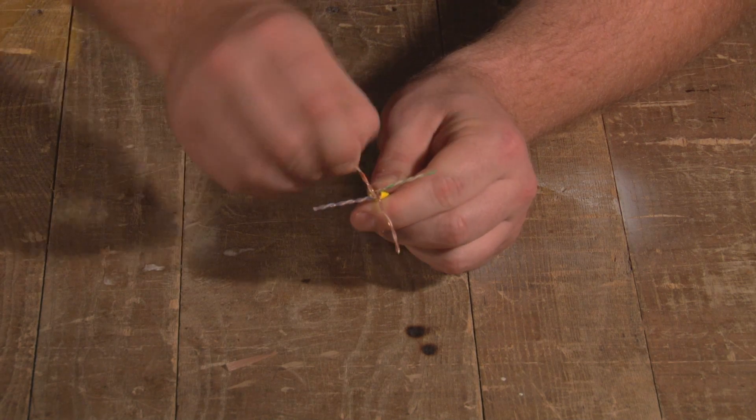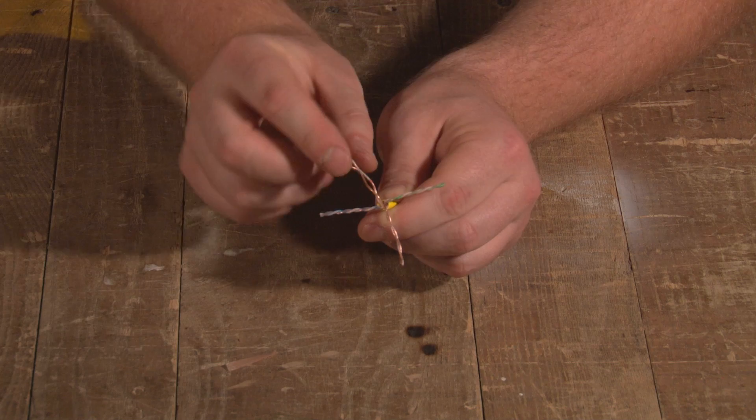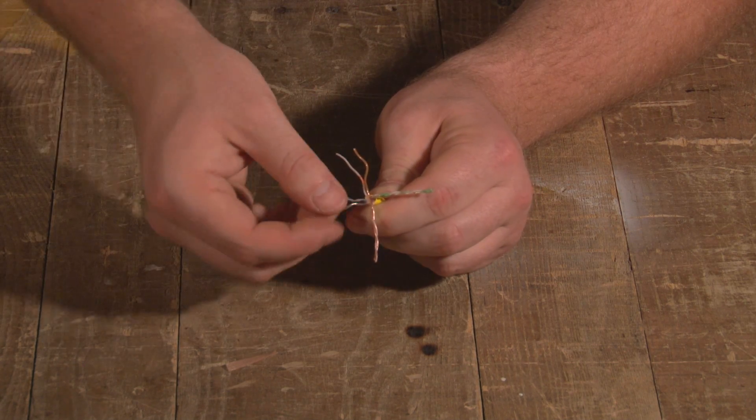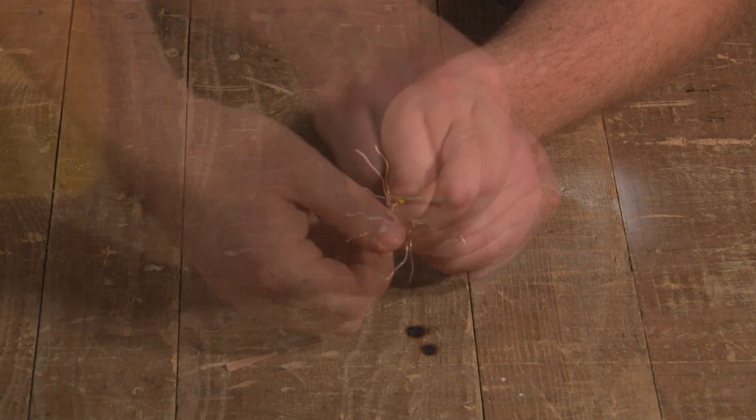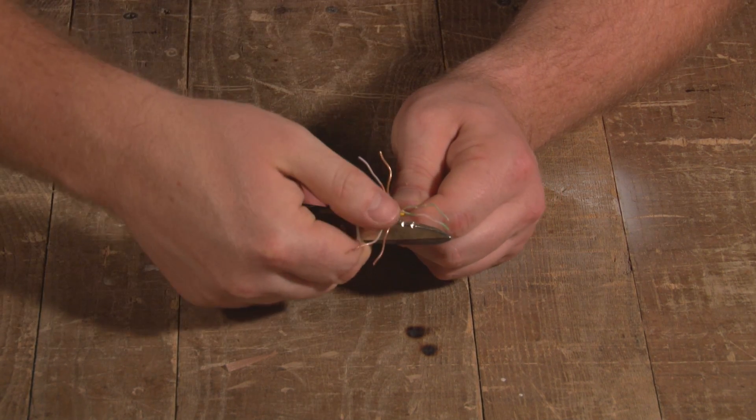Untwist the pairs, but keep the colors separate. Straighten the wires with snips.